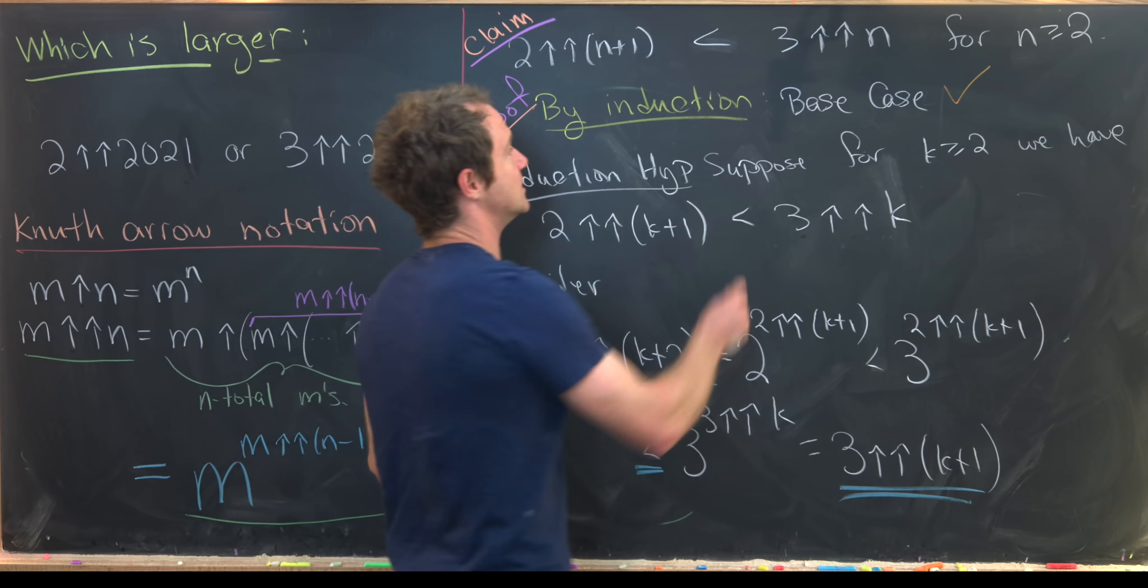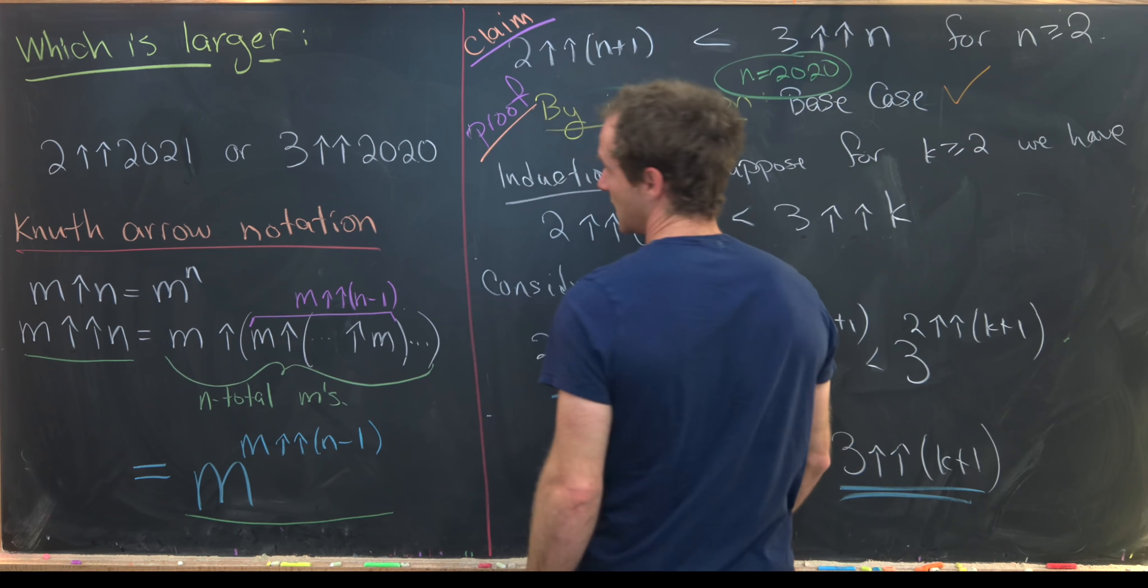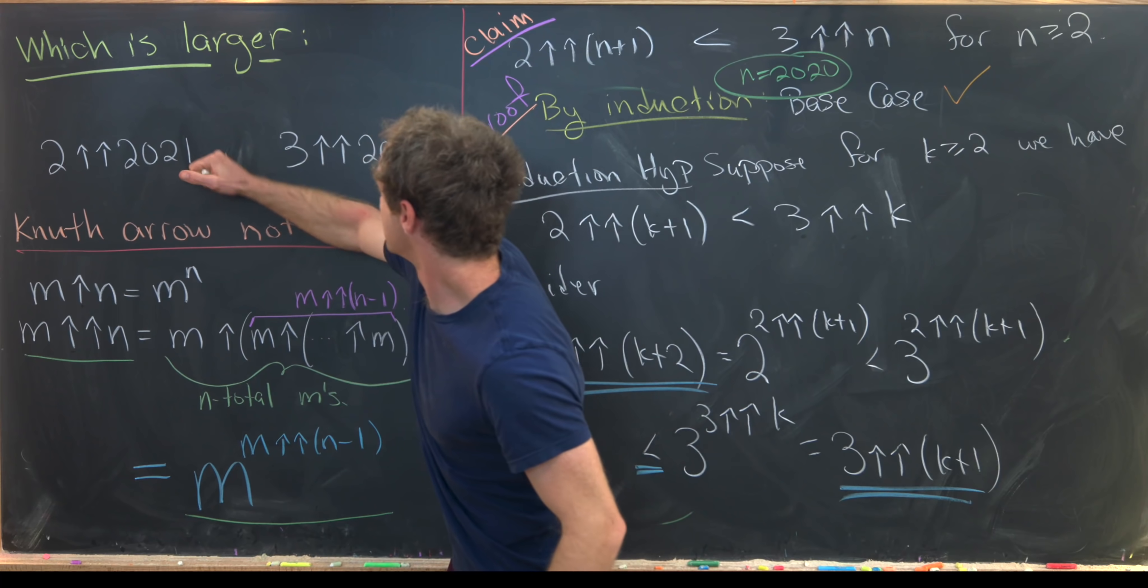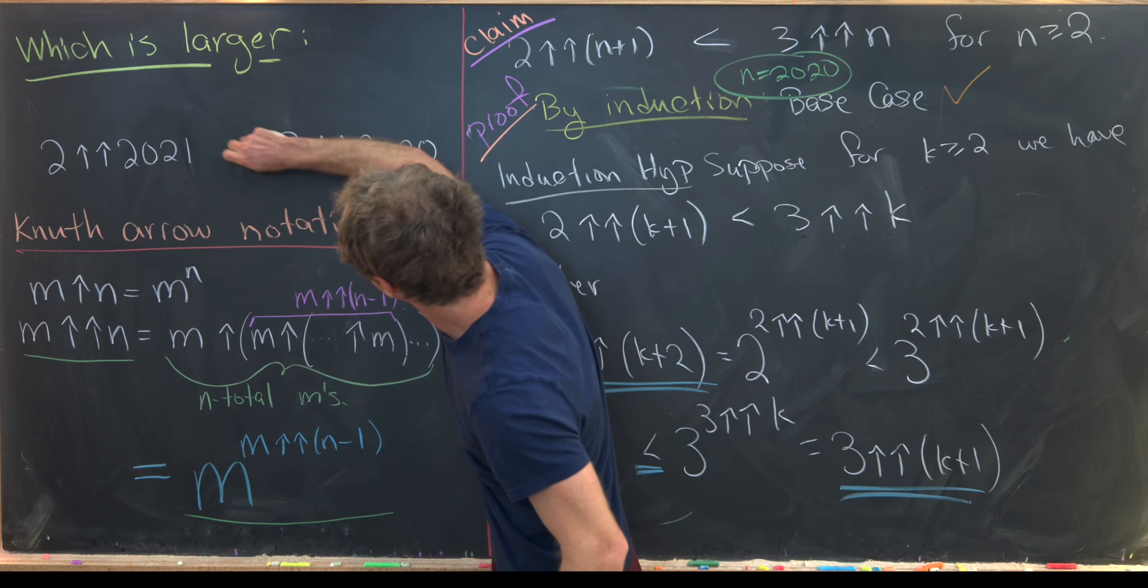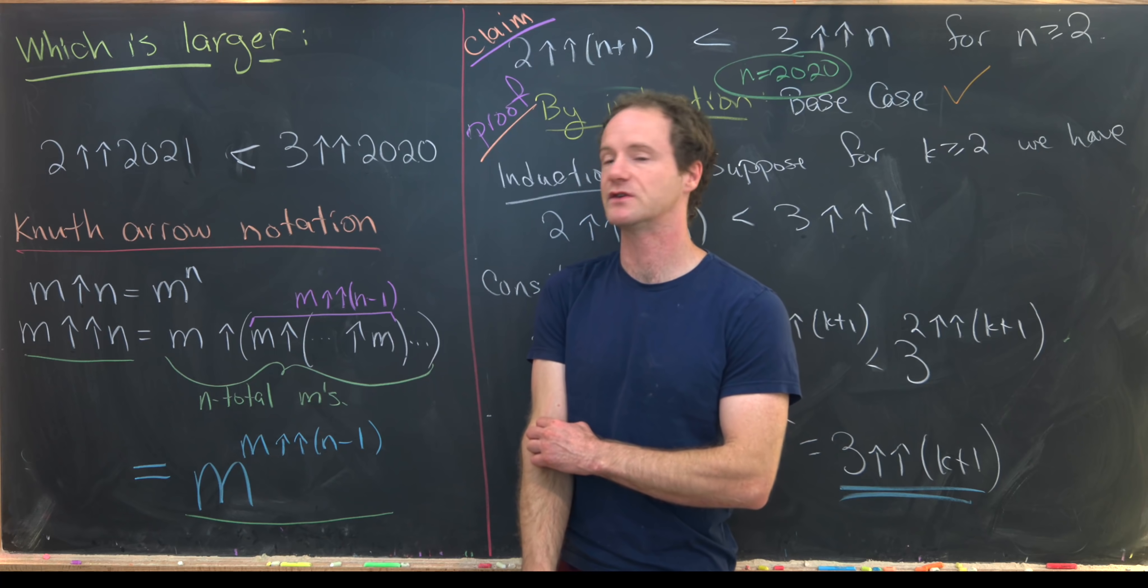But now we're done. We just set n equal to 2020 and that tells us that this 3 double up arrow 2020 is bigger than this 2 double up arrow 2021. And that's a good place to stop.